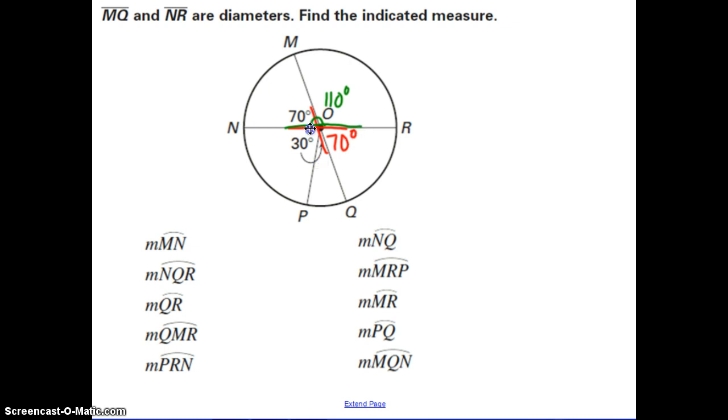and on this other side, we have that same line, makes 180, this is 70, and this is 30, so that leaves us with this angle being 80 degrees.